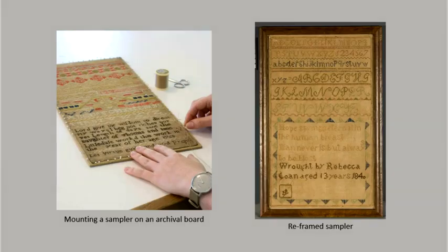Consultation with a conservator is beneficial if a framed piece exhibits any of these issues. Removing the textile from an acidic mount, cleaning and reframing using an archival mount, ultraviolet filtering glass or plexiglass, and appropriate spacers to keep the glazing from coming into contact with the piece can greatly improve the lifespan of an object.